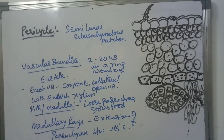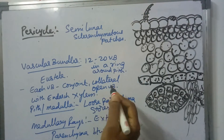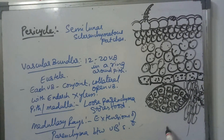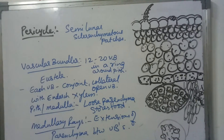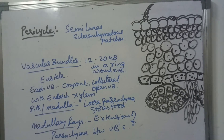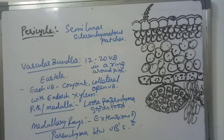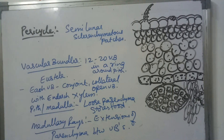Coming to vascular bundles: 15 to 20 vascular bundles are arranged in the form of a ring structure around the centrally located pith or medulla. This type of stele is called eustele. So in dicot stems, we will be able to see eustele.